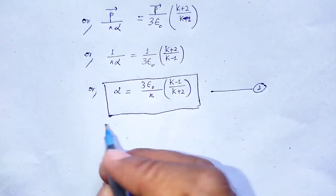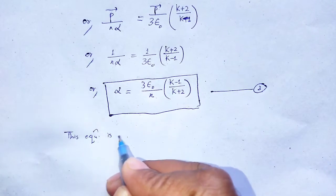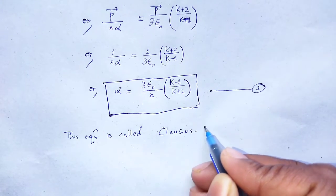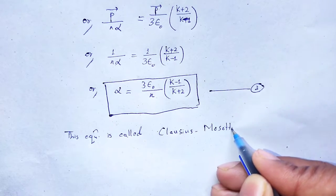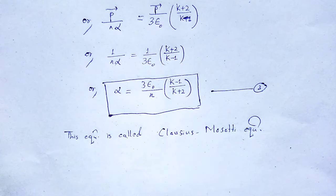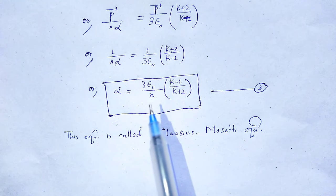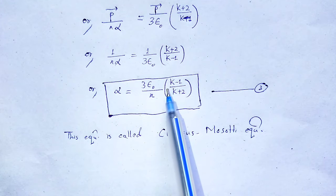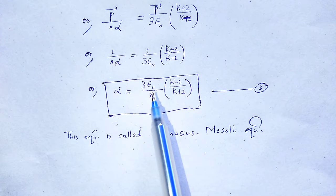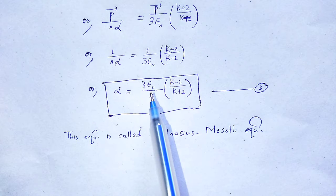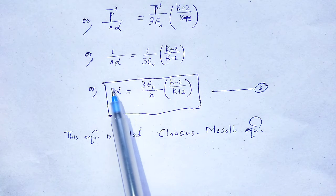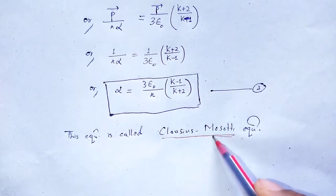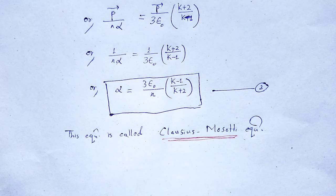This is the required expression, and this equation is called the Clausius-Mossotti equation. It is the relation between the macroscopic properties of the dielectric — determined by the dielectric constant K — and the microscopic properties of atoms — determined by the atomic polarizability α. In this way, the Clausius-Mossotti equation relates both microscopic and macroscopic properties in the case of solids.